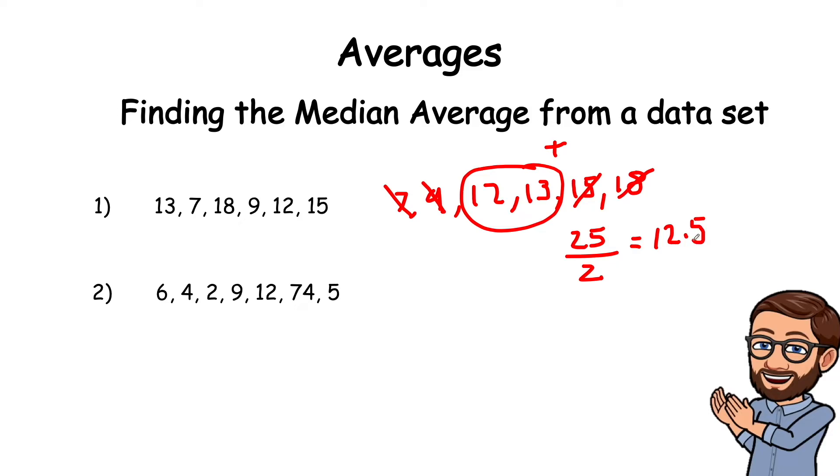So there's no actual middle number in this set, but you take the two middle numbers, add them together, and then divide them by 2, and that gives you your median.